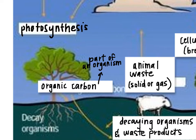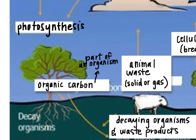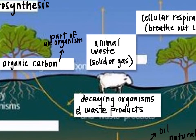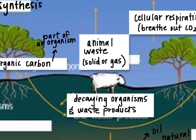They're making glucose, and that glucose is what we call organic carbon — it's a carbon that's part of an organism. We can have organic carbon as part of animals as well if we eat plants. After that, those organisms can begin to decay, and then the carbon is going to become a part of the soil.